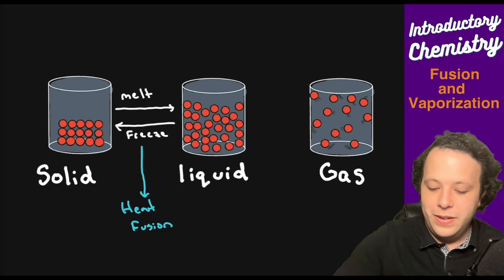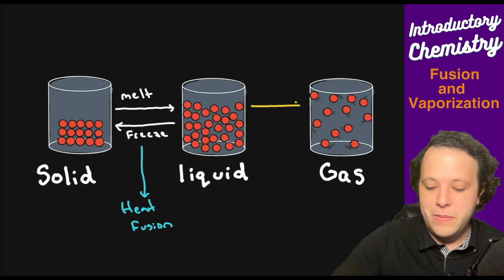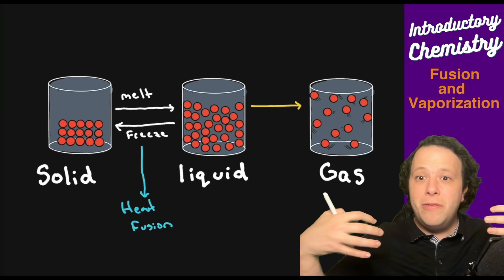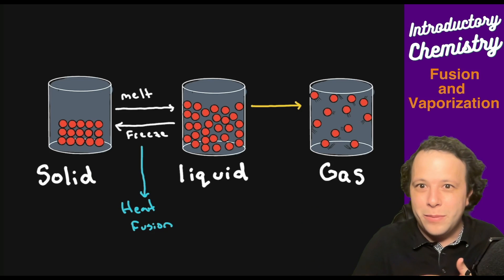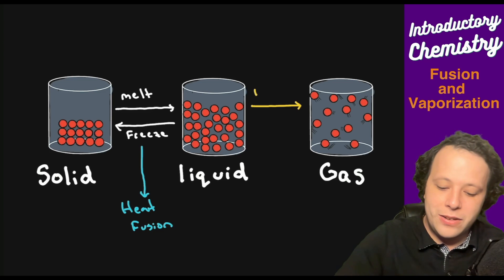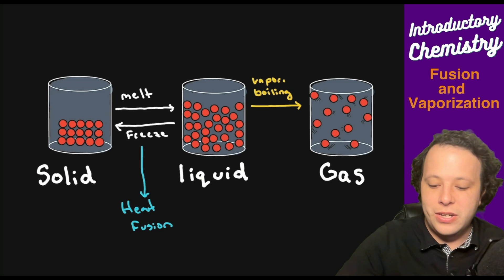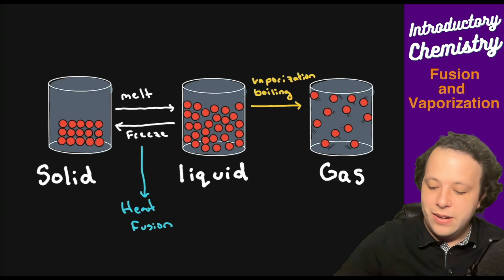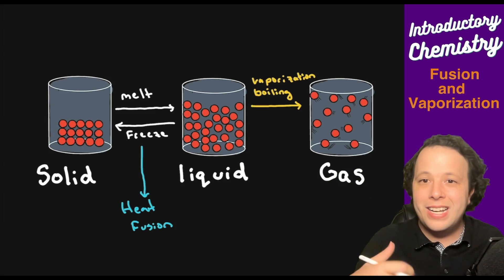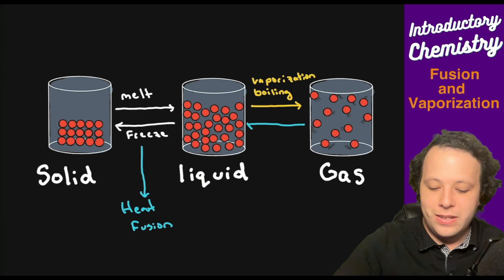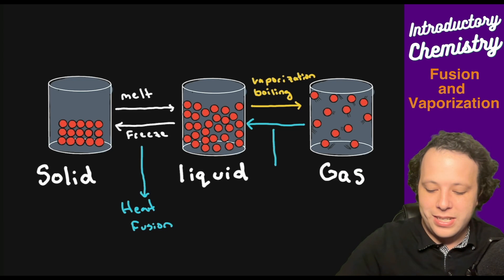When you have the other phase change — going from a liquid to a gas — the intermolecular forces drift so far apart that we break them, taking a lot of energy. This is considered boiling or vaporization going into the gas phase. If you then cool those gases back down, that is referred to as condensation.